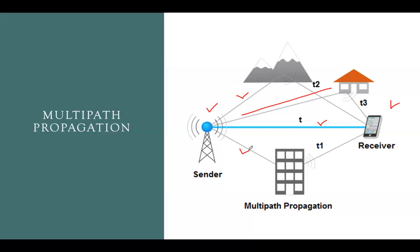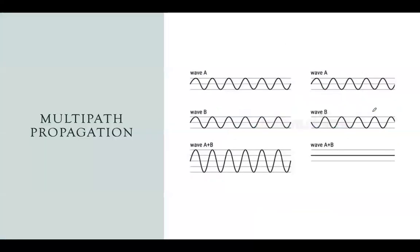Different signals travel different paths. When they get reflected by these obstacles, two important phenomena occur: first, the signal strength is reduced — the signal gets weakened; second, the phase of the signal changes. So when all these signals reach the receiver, each signal will have different amplitude and phase variations.